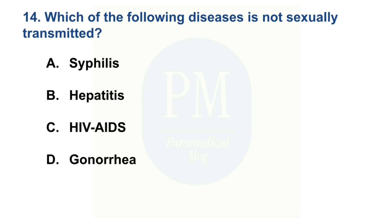Which of the following diseases is not sexually transmitted? Option A: Syphilis. Option B: Hepatitis. Option C: HIV/AIDS. Option D: Gonorrhea. The correct option is Option B — Hepatitis.